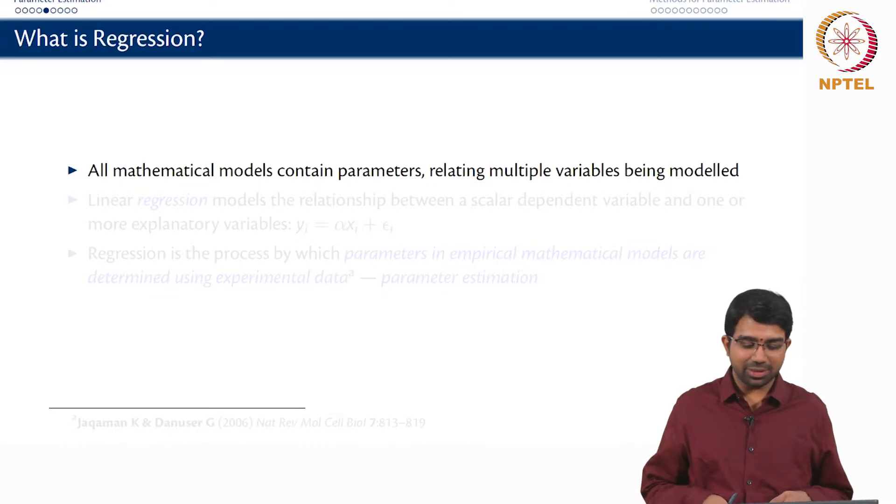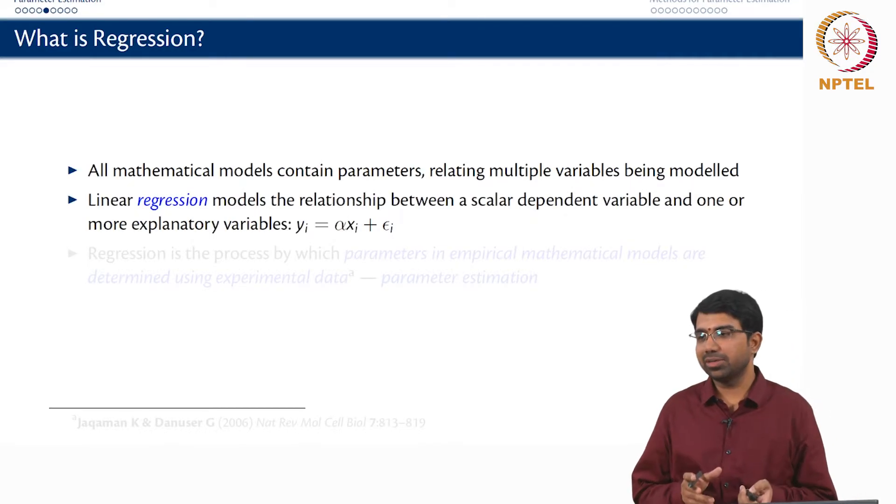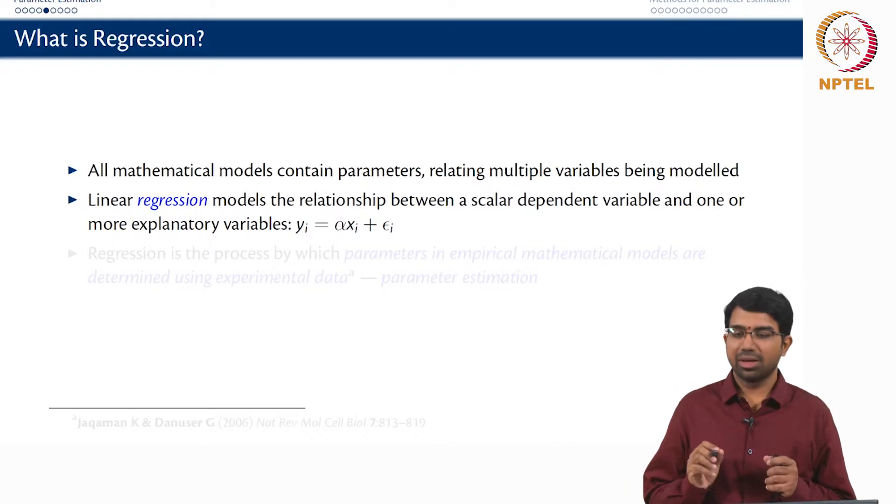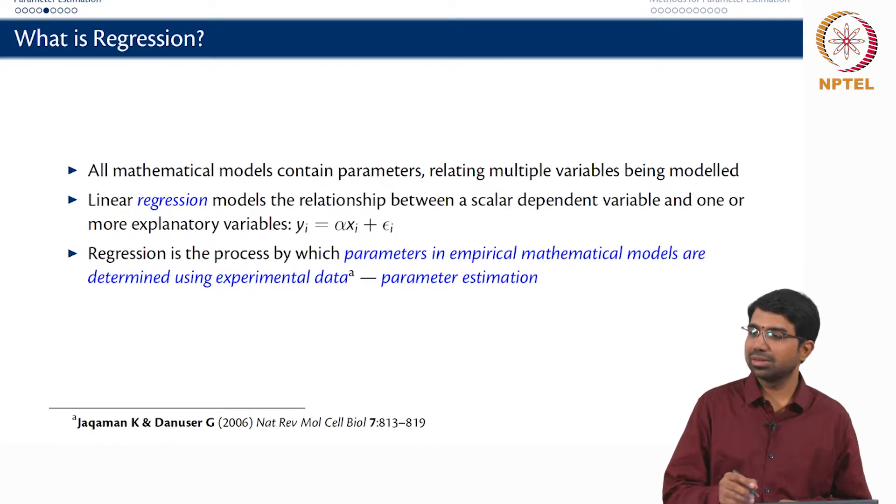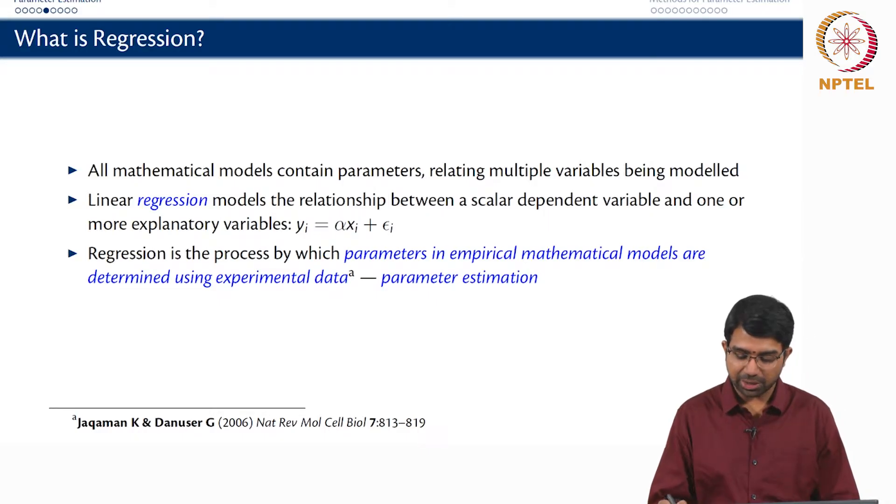So what is regression or parameter estimation? We know that all mathematical models contain parameters which connect the variables that are being modeled. All of you are very familiar with this classic linear regression: y is alpha_i into x_i plus some epsilon_i residual. And you basically minimize the residuals, so you do sigma (y_i minus alpha x_i) squared and you reduce it and you find the best alpha. You may also have an intercept if you want and so on.